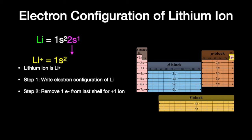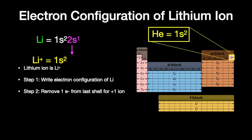We want to remove an electron from the last shell to create the plus 1 ion — we basically erase that section. And we have an electron configuration that's isoelectronic with helium. That's why lithium is plus 1 in charge.